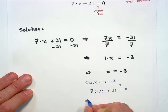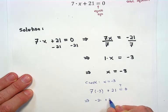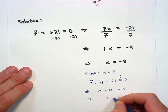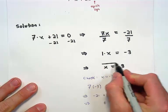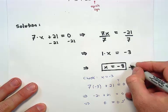Seven times negative three is negative 21. Negative 21 plus 21 is indeed zero. Zero equals zero. We now know for sure this is a solution to our equation.